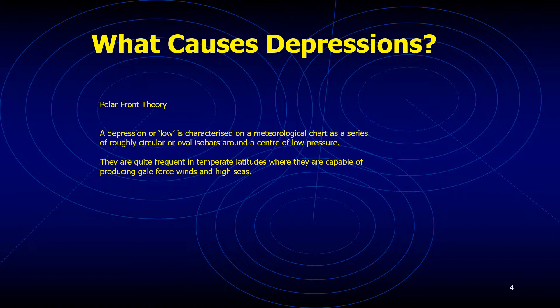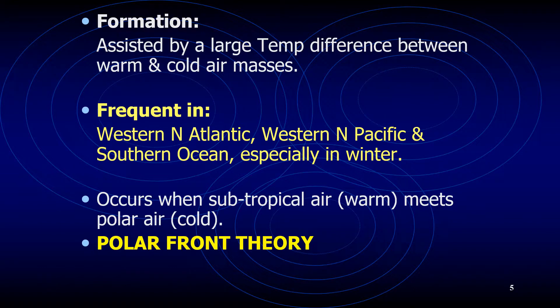There are a few theories about what causes depressions, but the most popular is the polar front theory. The development of a mid-latitude cyclone normally begins along the polar front, which is a semi-continuous global boundary separating cold polar air from warm subtropical air. Because the mid-latitude cyclonic storm forms and moves along the polar front in a wave-like manner, the developing storm is called a wave cyclone.